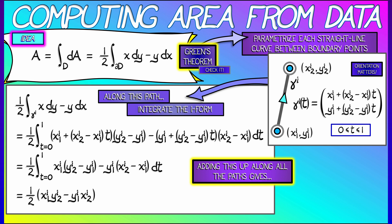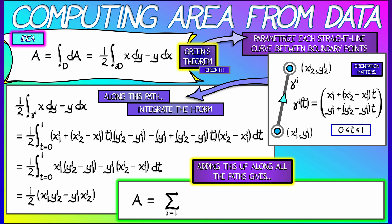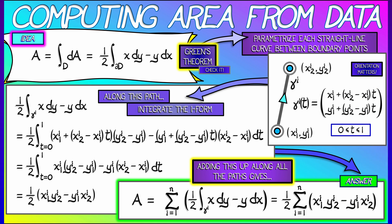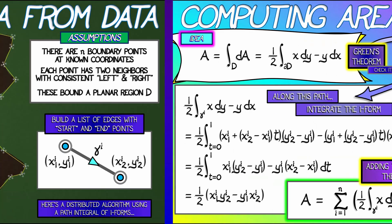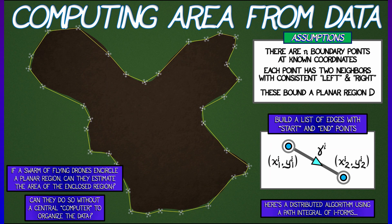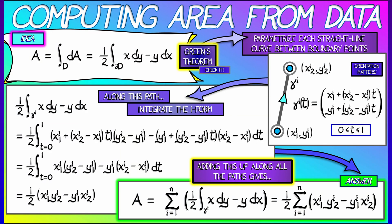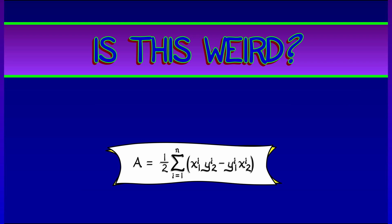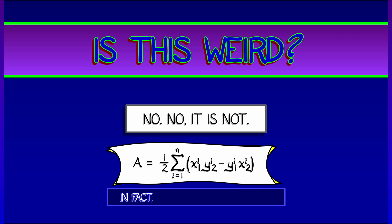Each term ½(x1_i y2_i − y1_i x2_i) is the contribution of the i-th edge. To get the net area, we sum all these one-form integrals for i from 1 to n, giving the combinatorial formula: Area = ½ Σ(x1_i y2_i − y1_i x2_i). This is really cool — it uses only local information, structured by message passing. The drones talk to their neighbors and collectively figure out the area of the bounded domain: a powerful application of Green's theorem turning local data into something global.